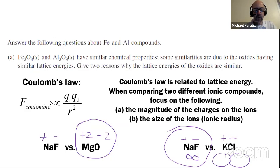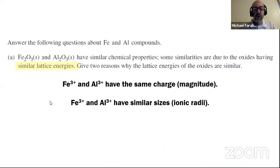In this question, we're not looking for differences but for similarities — similar lattice energies. The two reasons are right there: both Fe2O3 and Al2O3 have ions of the same charge, and the ions must have similar sizes. You don't have to actually know the radii — but if they have similar lattice energies, talk about charge and talk about the distance between the ions, i.e., the ionic radii. They are both the same and similar.